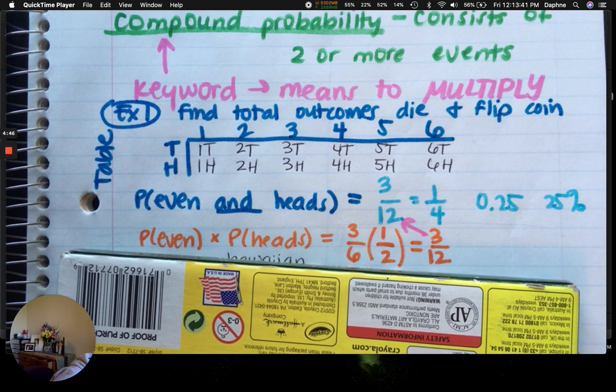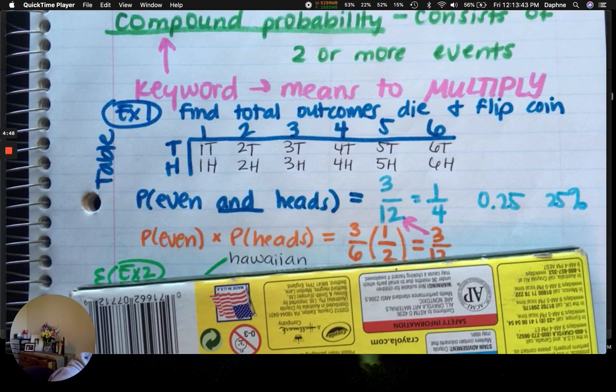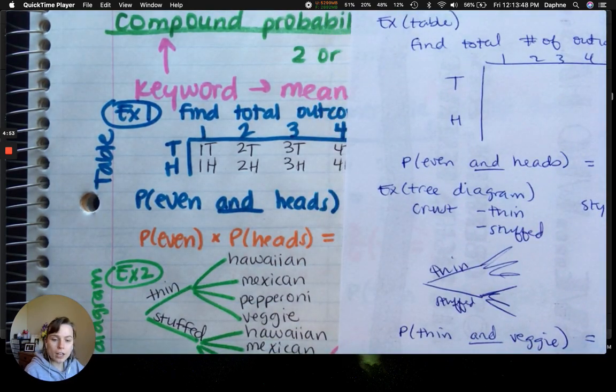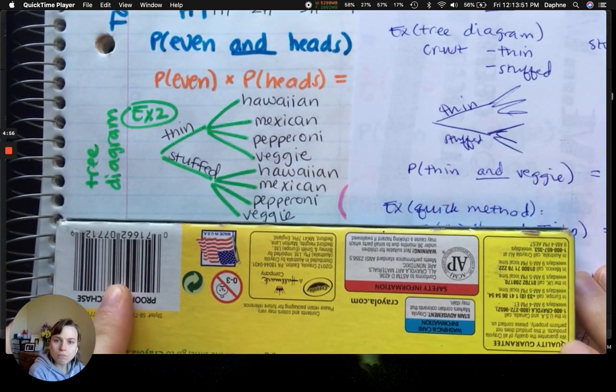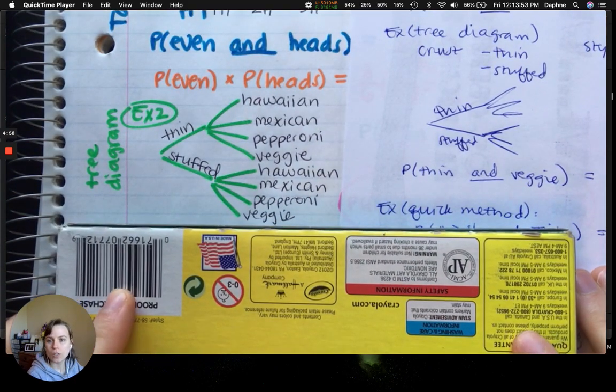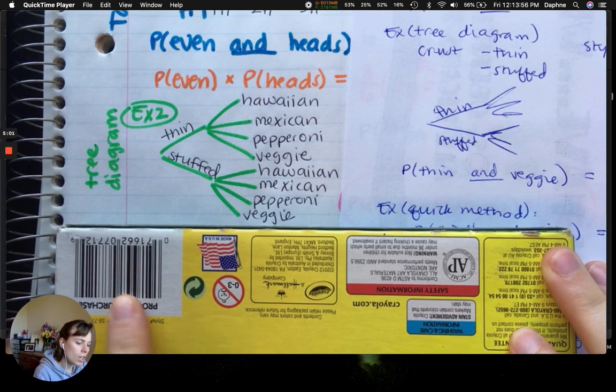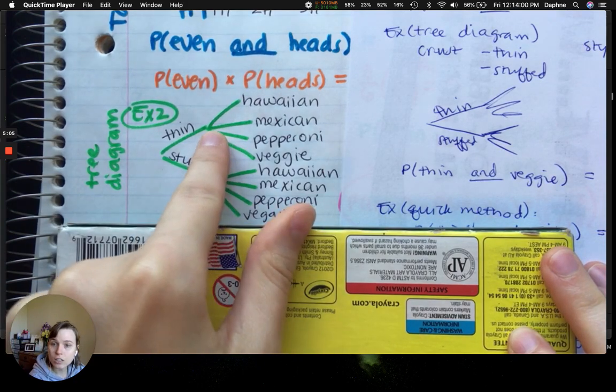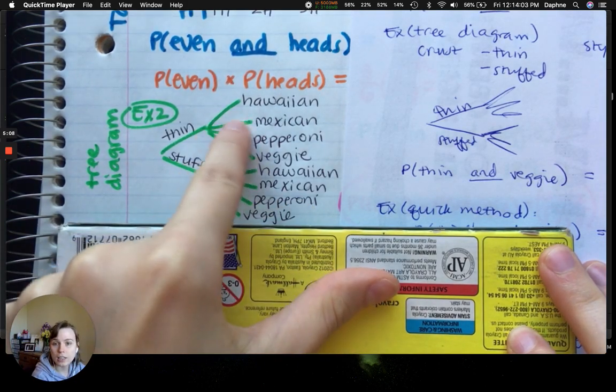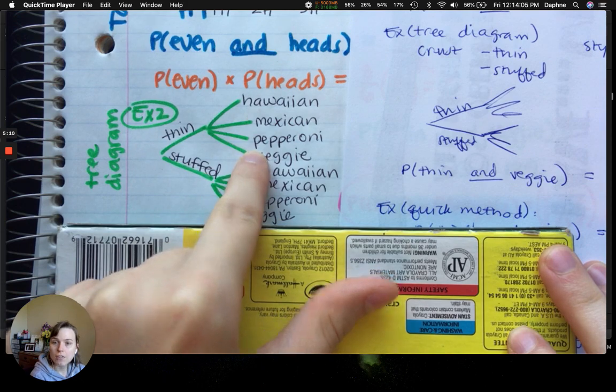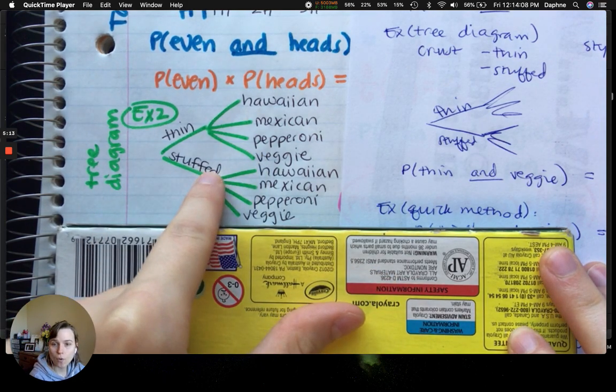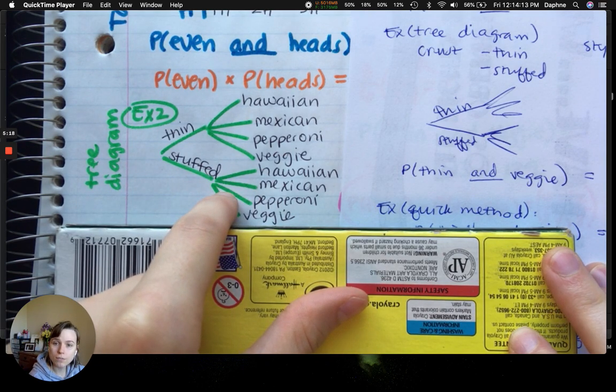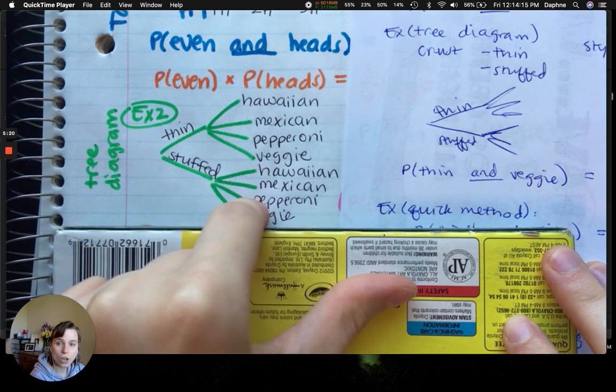Alright, next one we're going to do is a tree diagram. So, example 2, tree diagram. So, you have, we're going to make pizza. So, you have an option of a thin crust, which then you'll have toppings that are Hawaiian, Mexican, pepperoni, or veggie. And then, it's your style. Stuffed crust has the same 4 options. Hawaiian, Mexican, pepperoni, and veggie. So, then, out of the total, we have 8 total options.